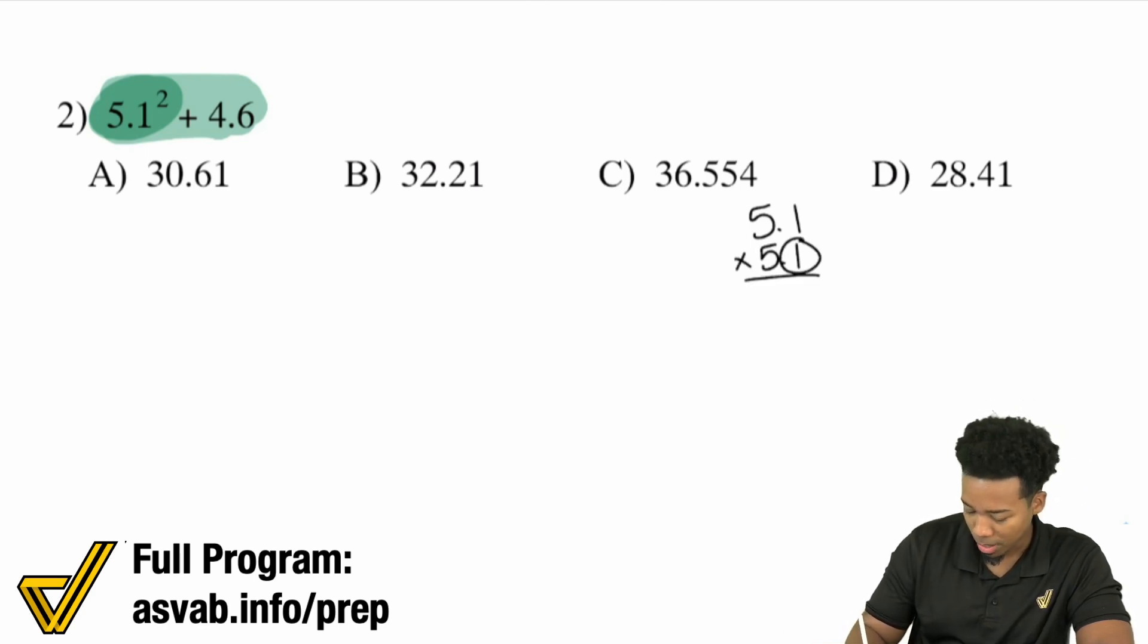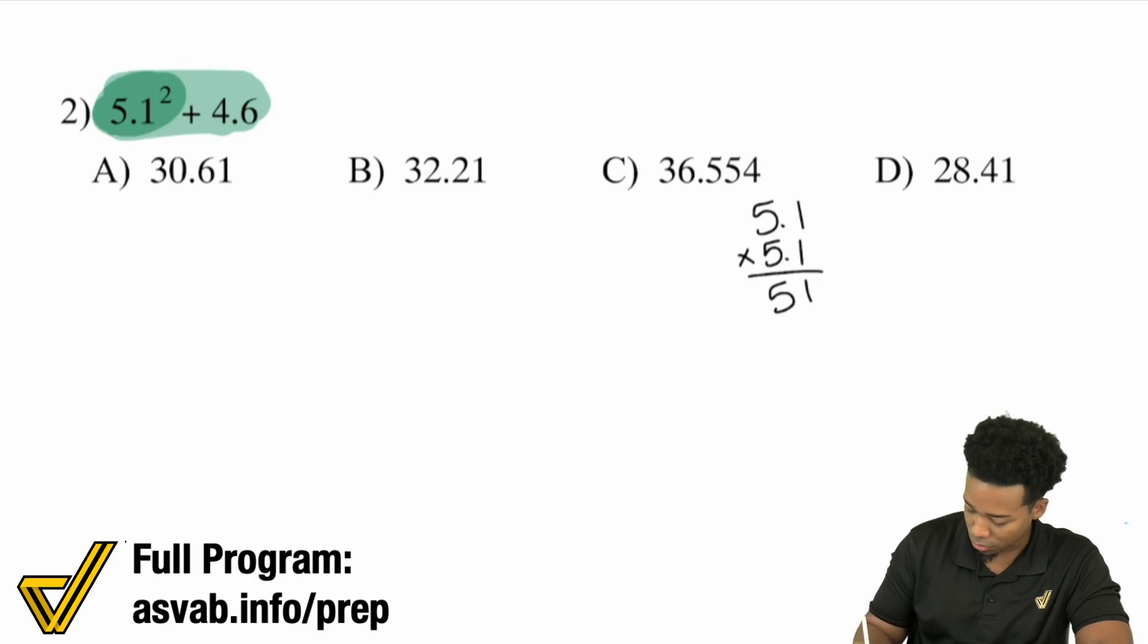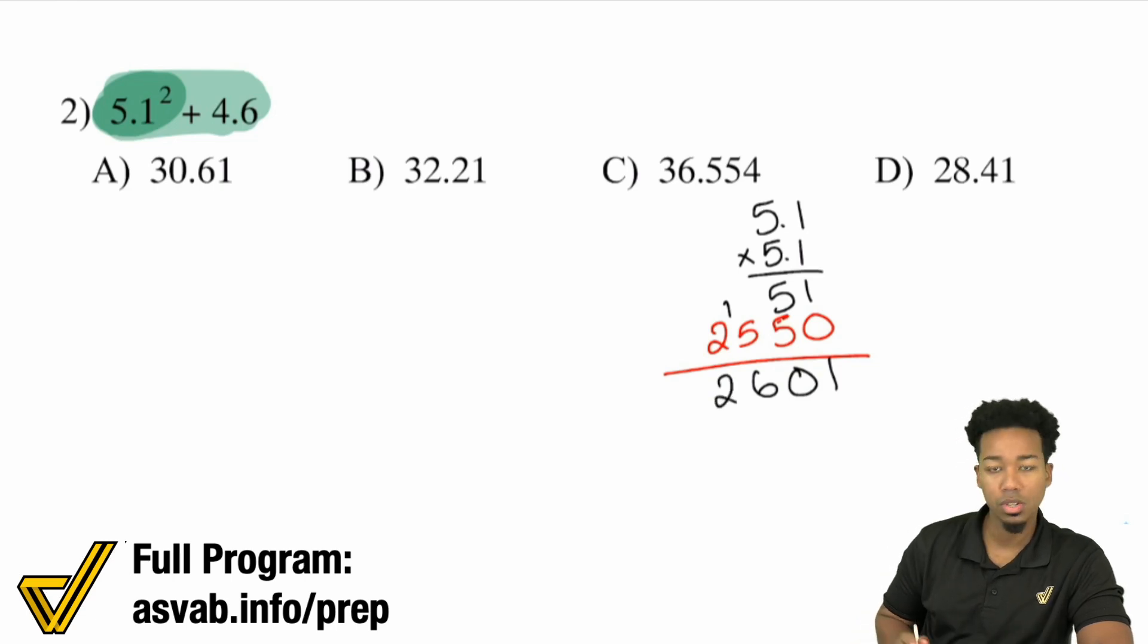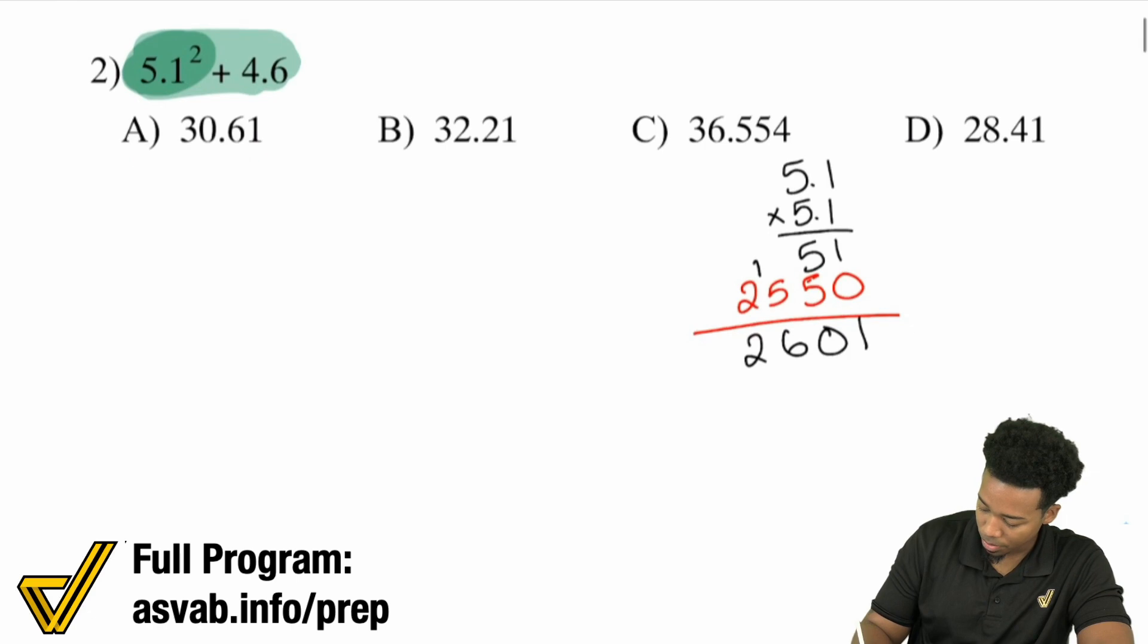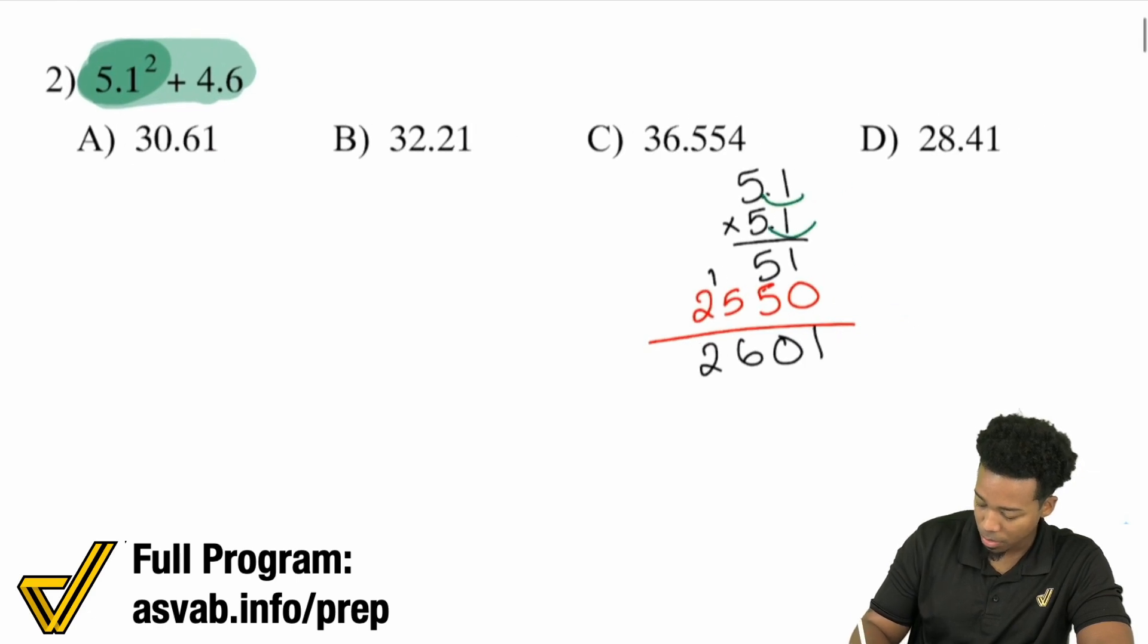5.1 times 5.1 and do it as quickly as you can. So 5.1, basically you're multiplying by one first. So that would just be 51. Next up, you're going to bring down that zero for the next row. And now you have 5.1 times 5. Well, here we'll go ahead and start off with 1 times 5, which is 5. 5 times 5, 25. Add it back all together and you're good. So we have ourselves 1, 10, 6 and 2. 2, 6, 0, 1. And what I'll do is I'll say, we had one decimal place there, one decimal place there. So one, two, that's going to be 26.01.